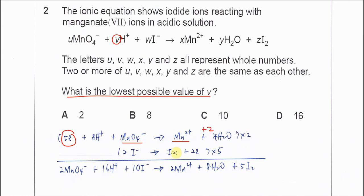After that, we combine the two half equations and sum up the reactants and the products. From this equation, we know that V is 16. The answer is D.